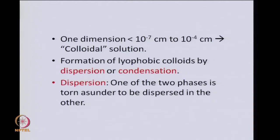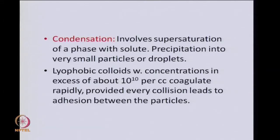There are two classes of methods for making colloidal dispersions. First, dispersion methods, where one phase is broken into smaller and smaller fragments in another phase, which end up as the dispersed phase. The other method is condensation, which involves supersaturation of a phase with a solute. As a result of this supersaturation, we have precipitation into very small particles or droplets, leading to colloidal dispersion.